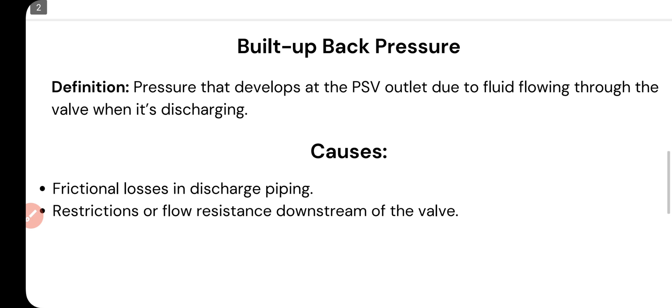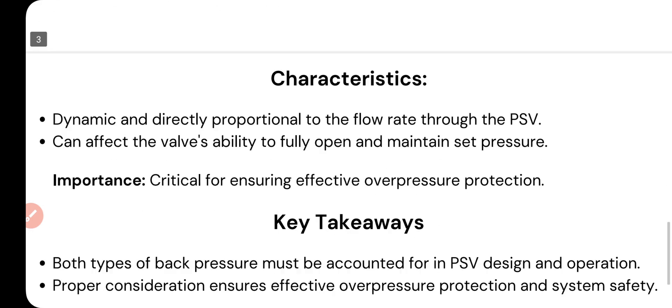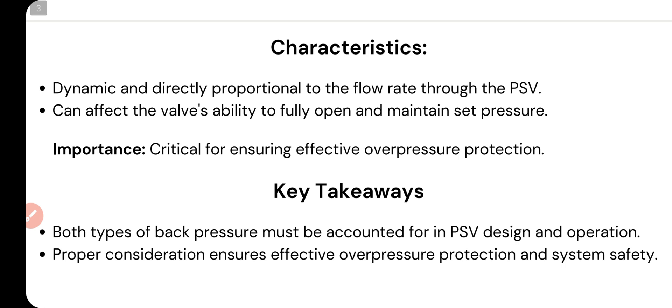The causes of built-up backpressure include frictional losses in the discharge piping and flow resistance downstream of the valve. Its key characteristic is that it is dynamic and directly proportional to the flow rate through the PSV — if the flow rate increases, the built-up backpressure increases as well.